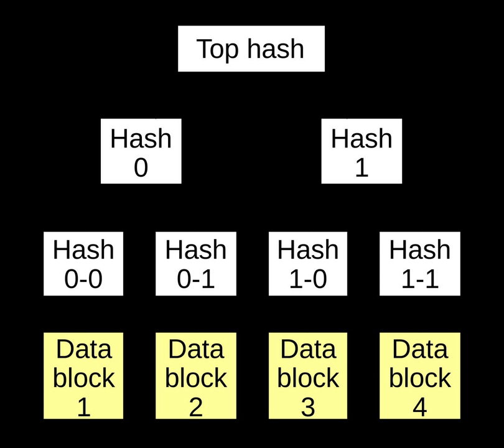How hash trees work: A hash tree is a tree of hashes in which leaves are the hashes of data blocks in, for instance, a file or set of files. Nodes further up in the tree are the hashes of their respective children. For example, in the picture, hash 0 is the result of hashing the result of concatenating hash 0-0 and hash 0-1. That is, hash 0 equals the hash of hash 0-0 plus hash 0-1, where plus denotes concatenation. Most hash tree implementations are binary — two child nodes under each node — but they can just as well use many more child nodes under each node.